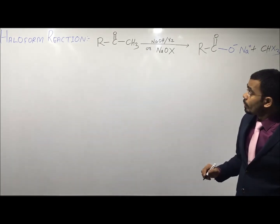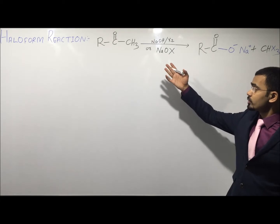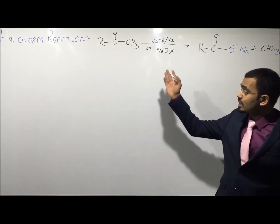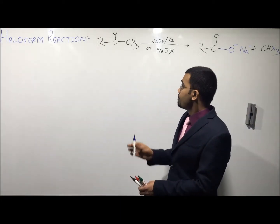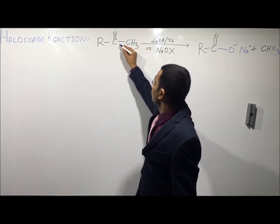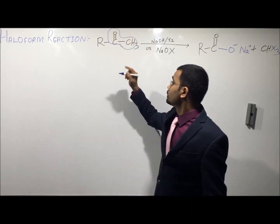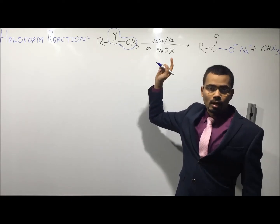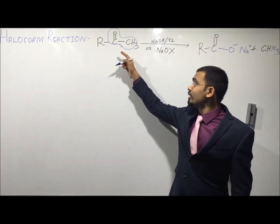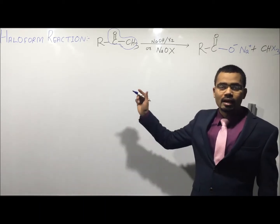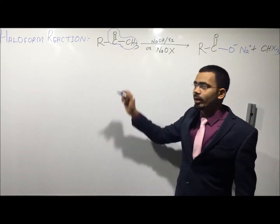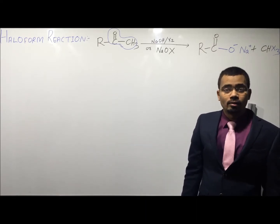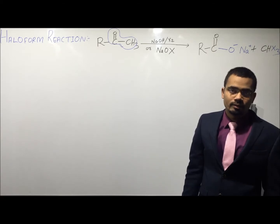Let us see which substrates will give the haloform reaction. This reaction is shown by methyl ketones. This reaction is shown by a compound having a methyl ketone group, or a compound which can be easily converted into a methyl ketone, such as primary alcohol, secondary alcohol, or alkyl halide.